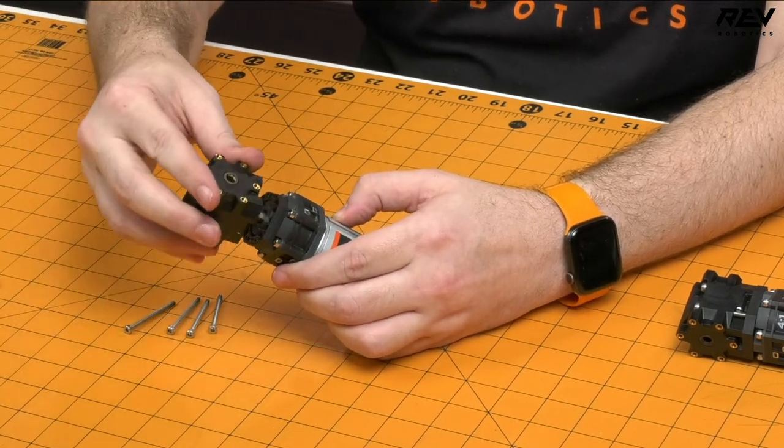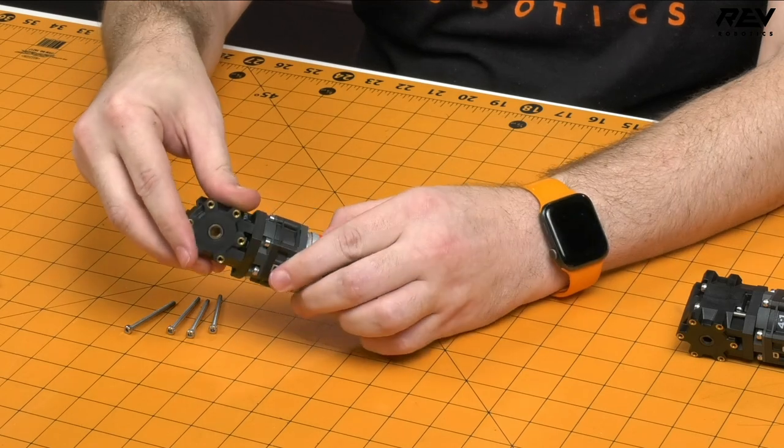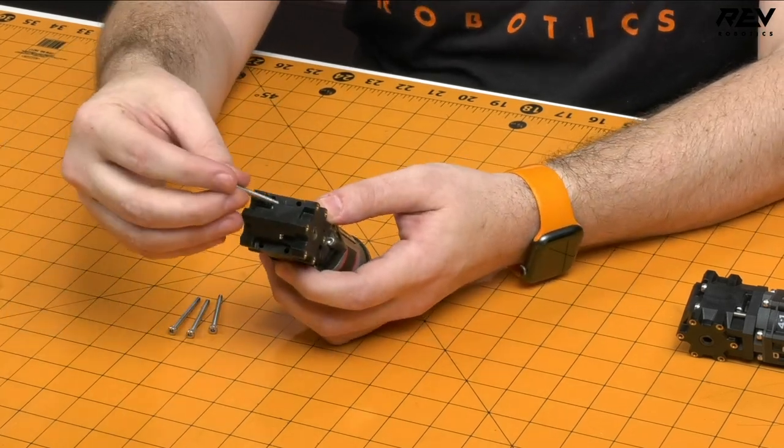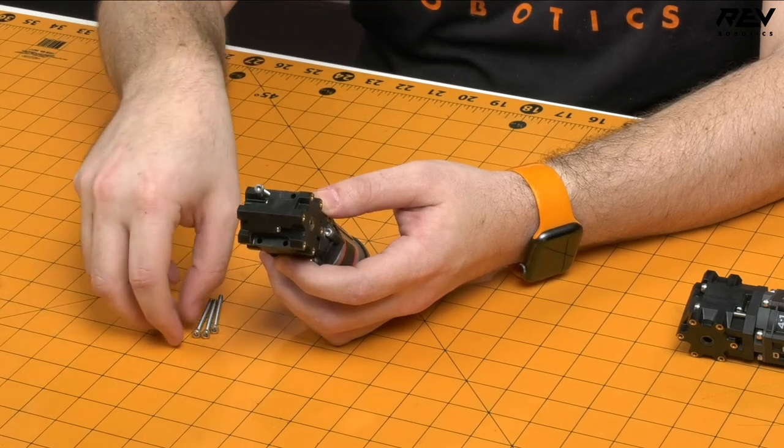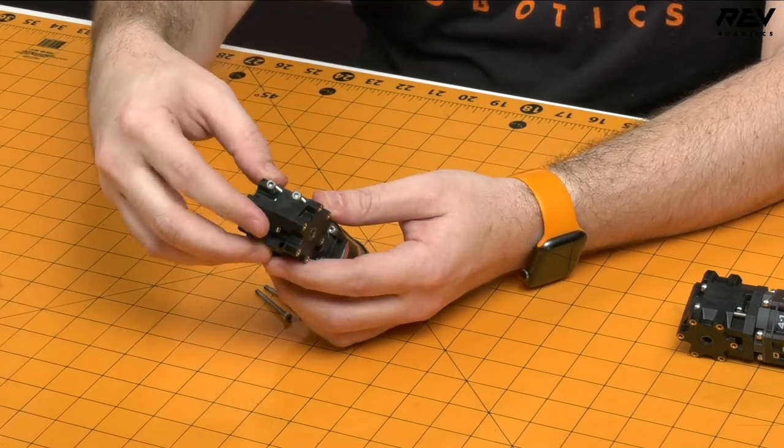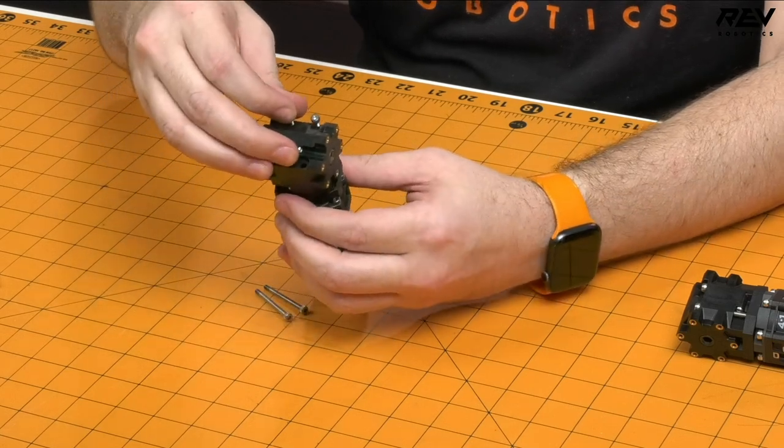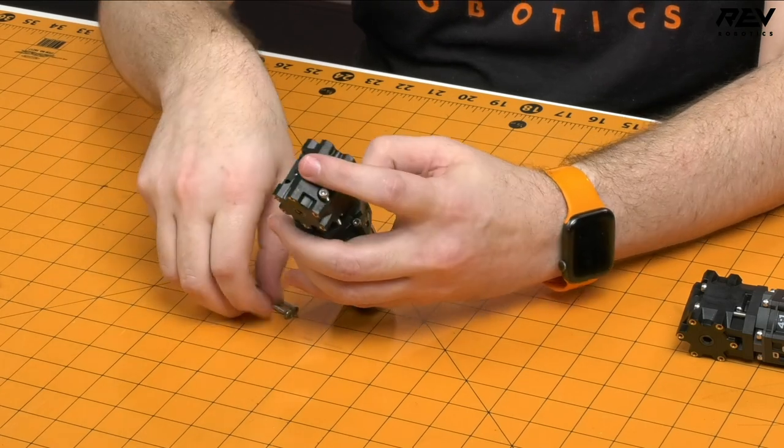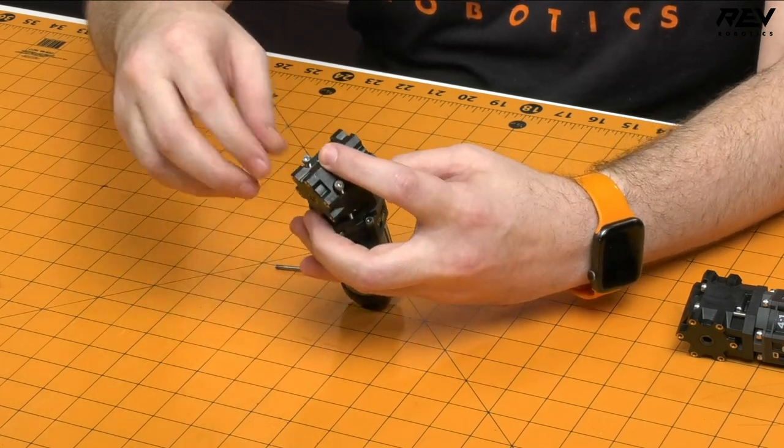And then you take the ultra 90 degree gearbox, line it up with the five millimeter hex and then use the included hardware through these four holes here. And then this going through the spacer will then screw into the mounting holes that are already in the ultra planetary itself.